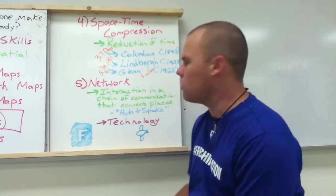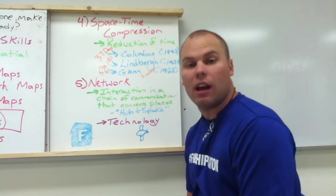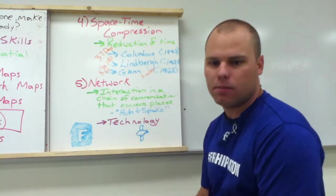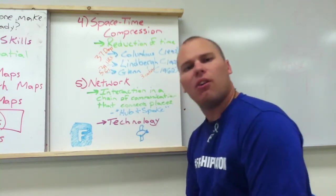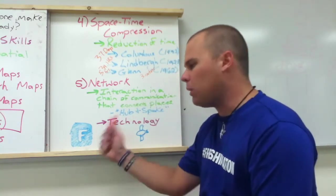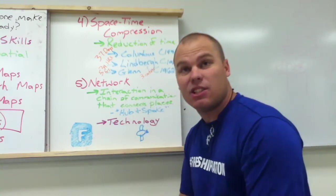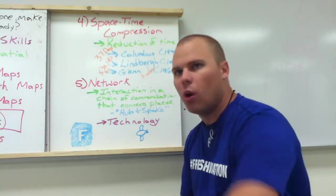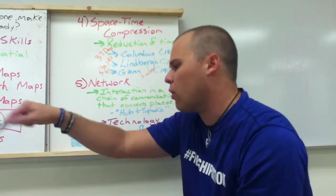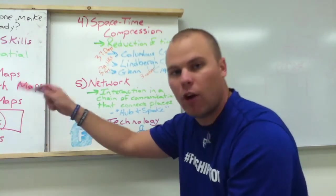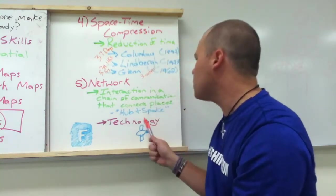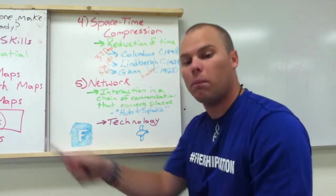Another point is networks. A network is an interaction in a chain of communication that connects places. For example, a hub and spoke — when you buy a ticket to go from Tokyo to the United States, the plane doesn't go all the way to your destination city. It might take you to China first with a layover, switch planes, and then fly somewhere else before arriving in the United States. That's called a hub and spoke — a network connecting to get you from one place to another.